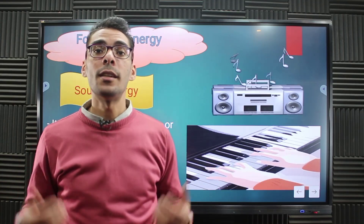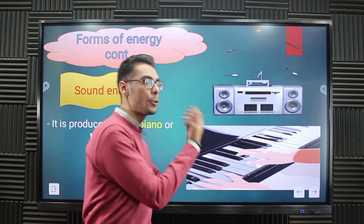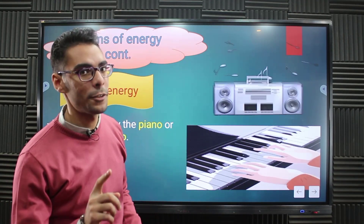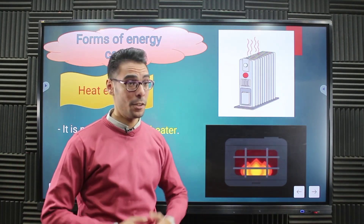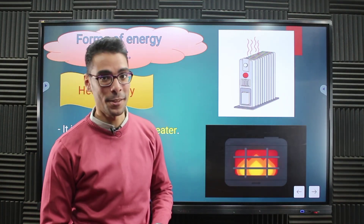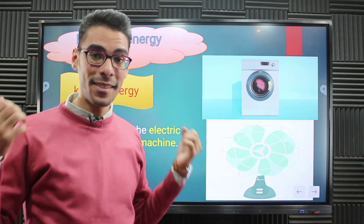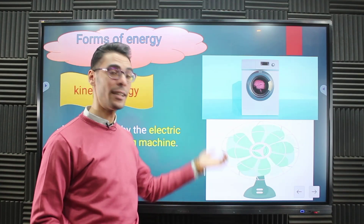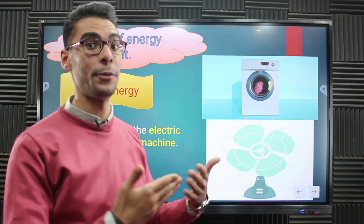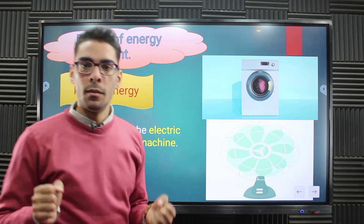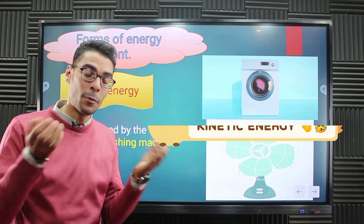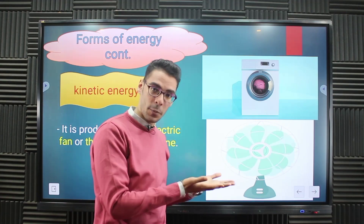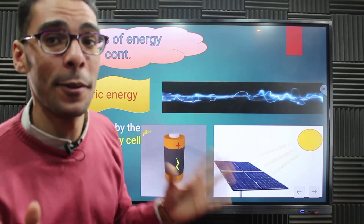The second question: which form of energy is produced by the radio and the piano? It's a form of energy you can hear — which is sound energy. And here, one of the easiest forms of energy: it's produced by the electric heater — heat energy. If that's your answer, you are amazing. Next: the form of energy produced by the movement of the electric fan and the washing machine — it's movement, but in the forms of energy we use the word kinetic energy. So kinetic energy is produced by the electric fan and the washing machine.